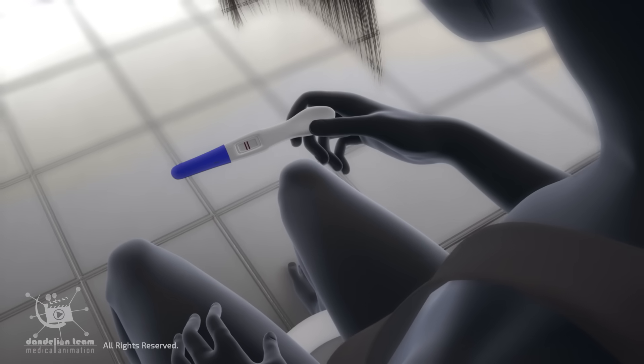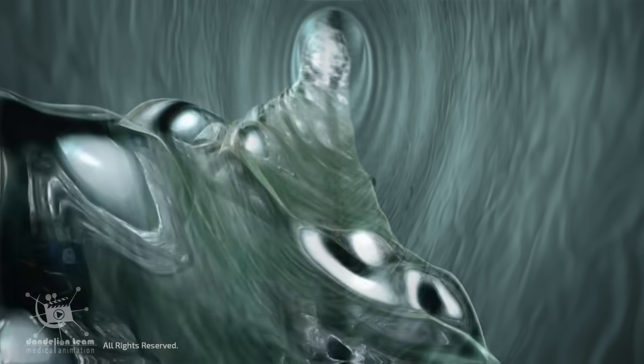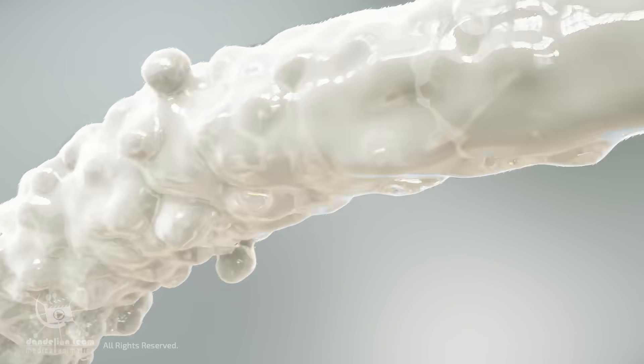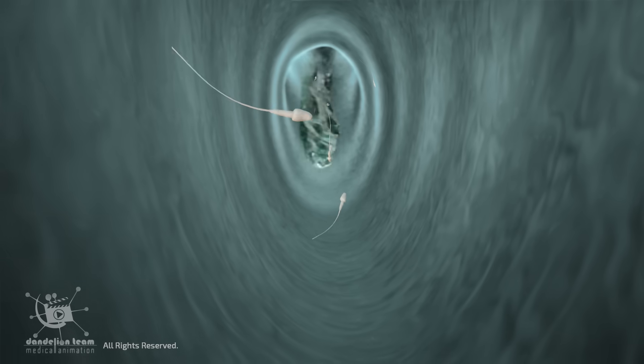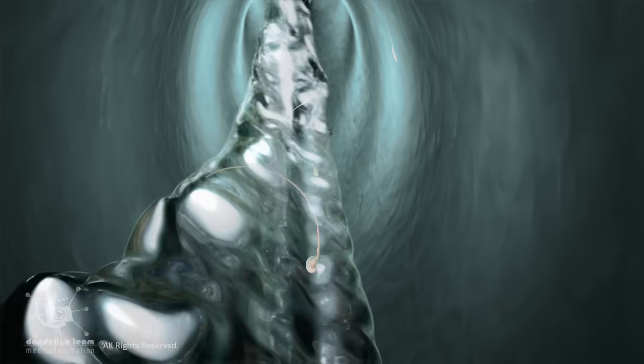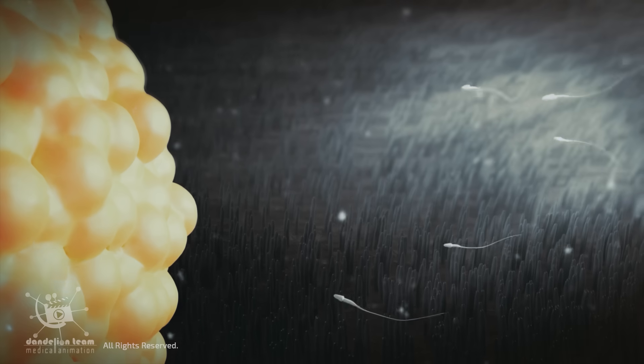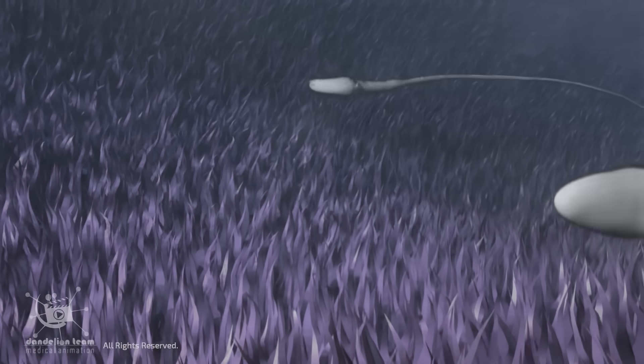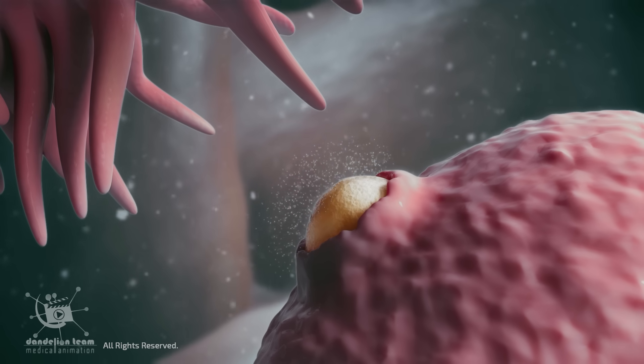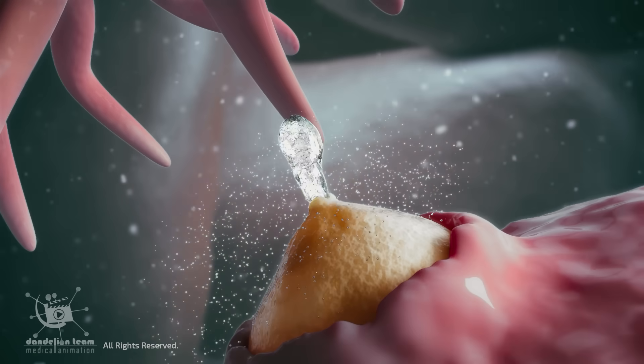Pre-ejaculate can still cause pregnancy, even though it usually doesn't contain sperm. After a previous ejaculation, sperm may remain in the urethra, and when pre-ejaculate is released, it can pick up these leftover sperm and carry them out. Even a very small number of sperm is enough to fertilize an egg, especially if pre-ejaculate enters the vagina during a woman's fertile window around ovulation.